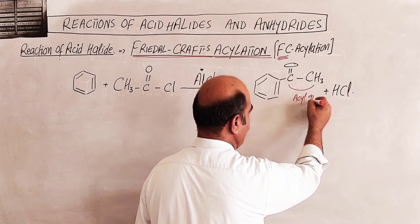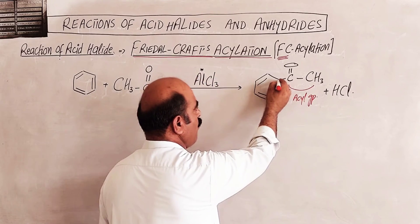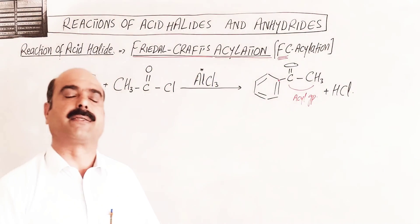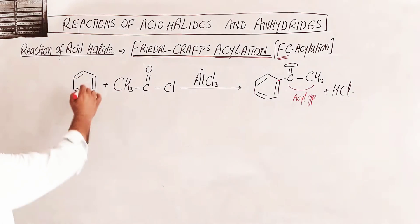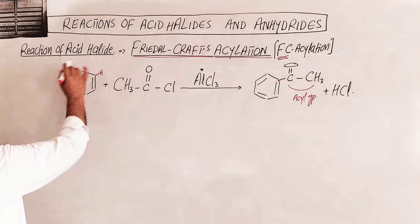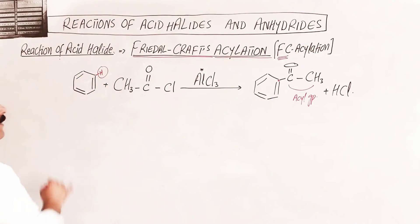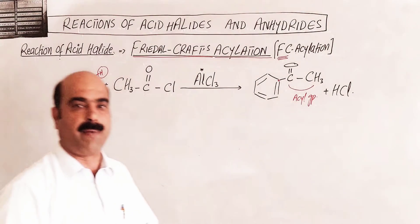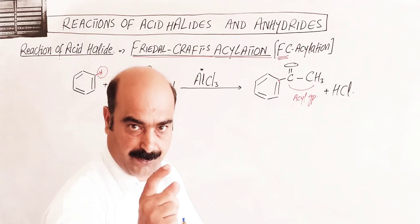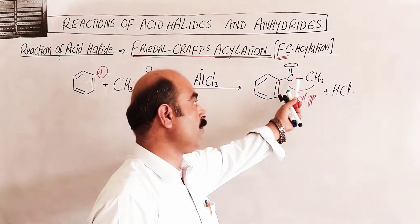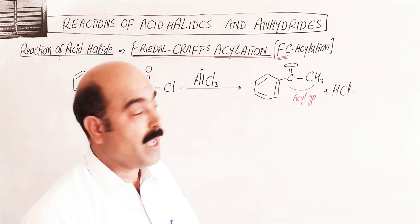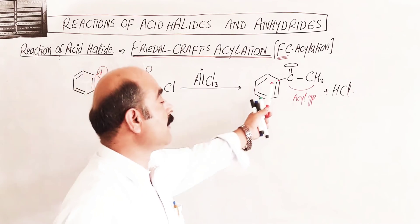In acylation, one of the hydrogen atoms of the benzene ring is replaced, displaced, and substituted by an acyl group. Such chemical reactions are called acylation, and the original product is the solution of acylation.